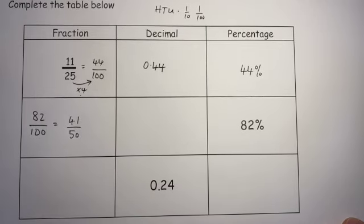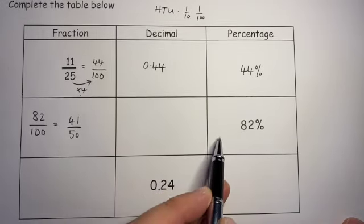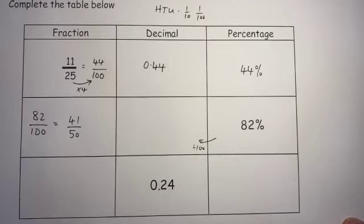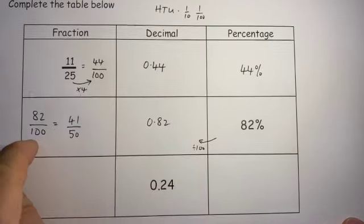I can't cancel that down any further, so there's the answer to that one. And if I times by 100 to get the percentage, then I could divide by 100 to get the decimal, so the decimal there would be 0.82, though I could have seen that from there anyway.